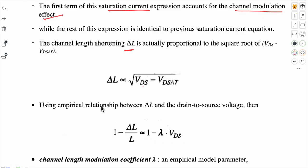By using empirical relationship between delta L and VDS voltage, we have 1 minus delta L by L almost equals to 1 minus lambda VDS. So this is the same way we can denote.